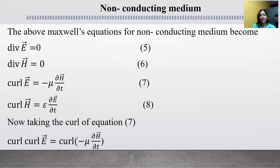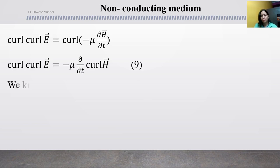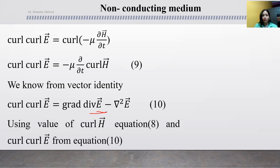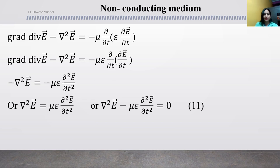Then taking the curl of equation 7, interchanging operators, substituting the curl H value from equation 8, and using divergence E equals zero from equation 5, we simplify to get: del squared E minus mu epsilon del squared E over del t squared equal to 0. Similarly for H.